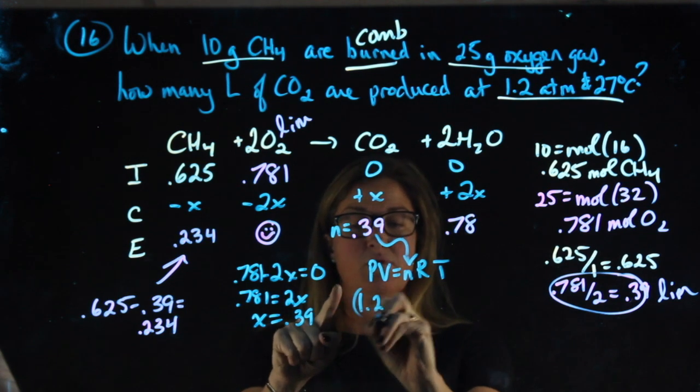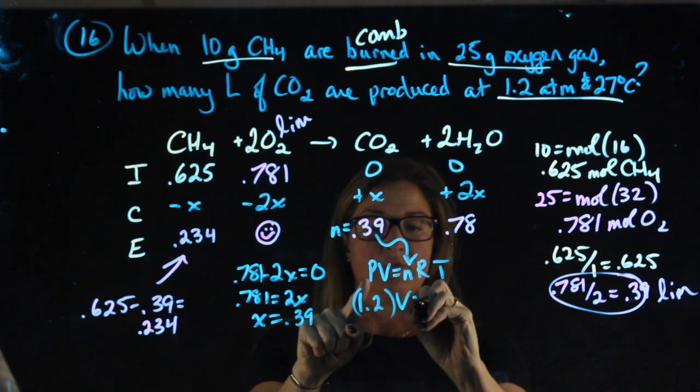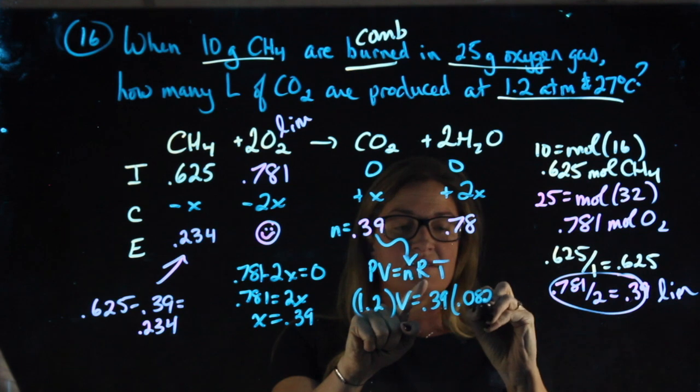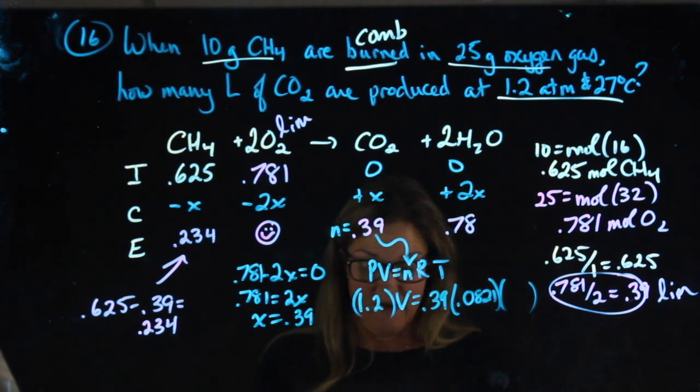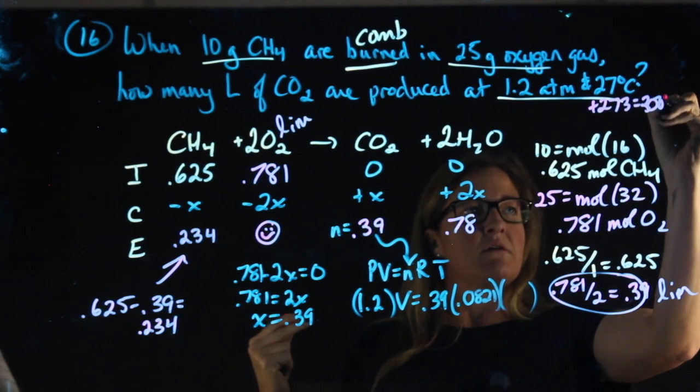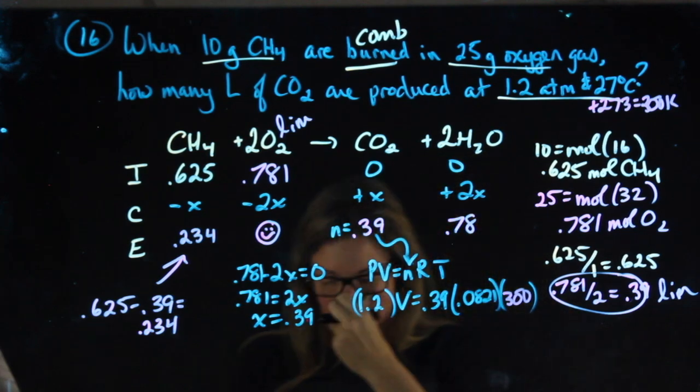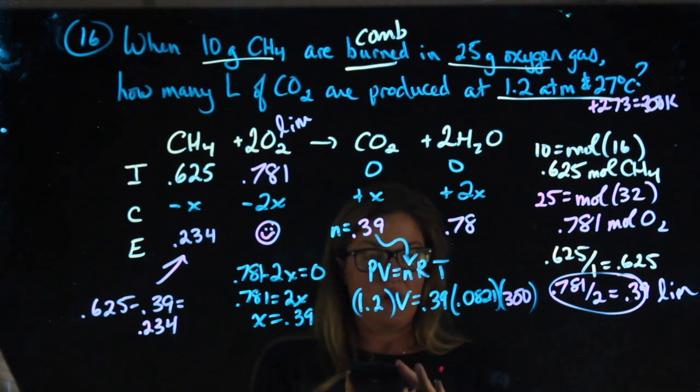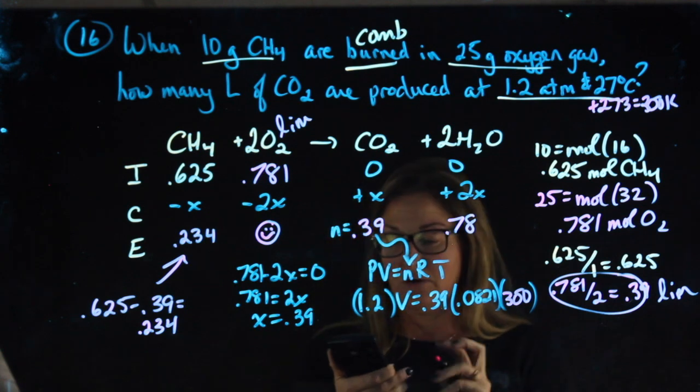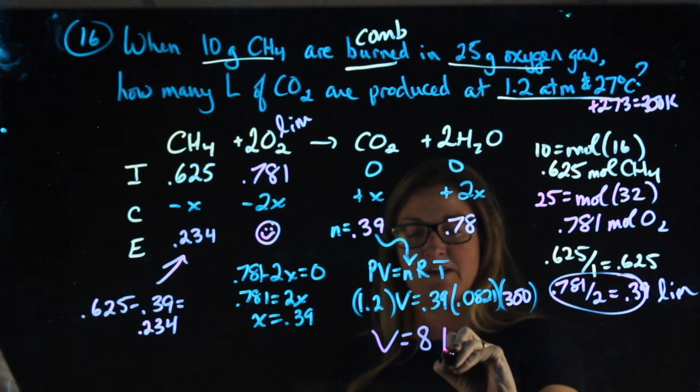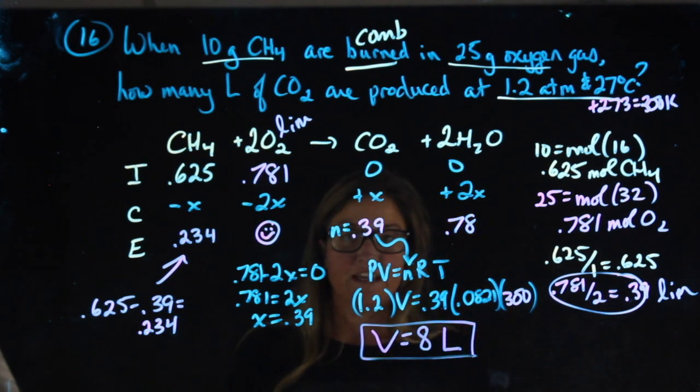My pressure is 1.2. That's in the correct units. I'm looking for volume. Moles are 0.39. R is 0.0821. Temperature needs to be in Kelvin. 27 plus 273 gives me 300 Kelvin. So now in my calculator, 0.39 times 0.0821 times 300 divided by 1.2 leaves me with almost 8 exactly. Volume from PV equals nRT is in liters.